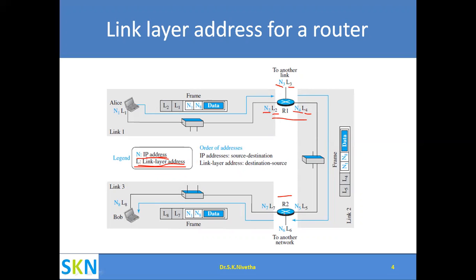Similarly for Router 2. But when we look at the laptop — the end host — it is assigned only one link layer address and one network layer address. So hosts have only one of each, while routers and other connecting devices have a number of addresses equal to the number of interfaces.